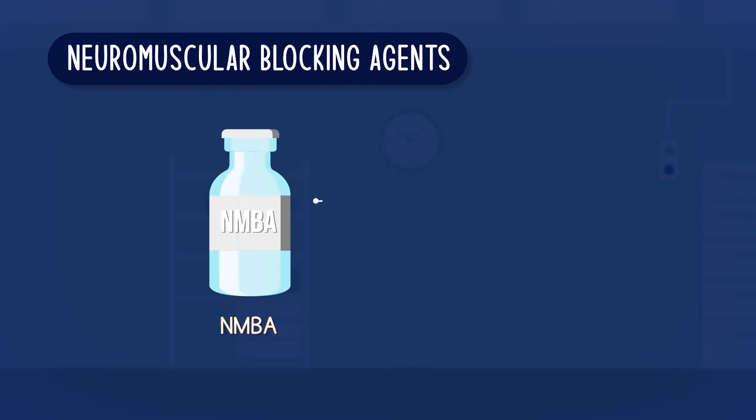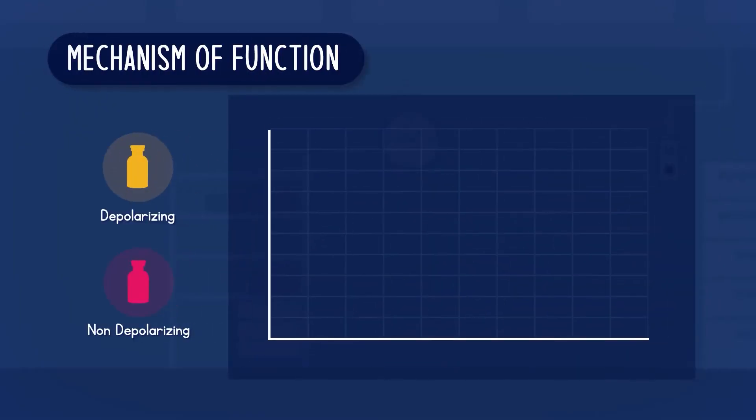Blocking agents are divided into two categories: depolarizing and non-depolarizing blocking agents. Each have their own mechanism of function and therefore have different applications in a clinical setting. Depolarizing agents have a short lasting mechanism of action whilst non-depolarizing agents have a much longer lasting mechanism of action.